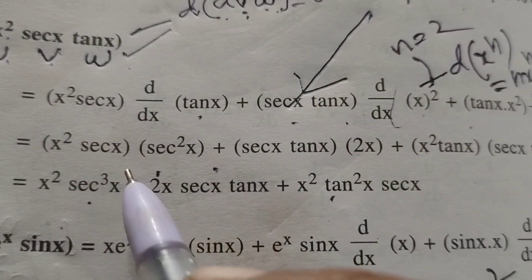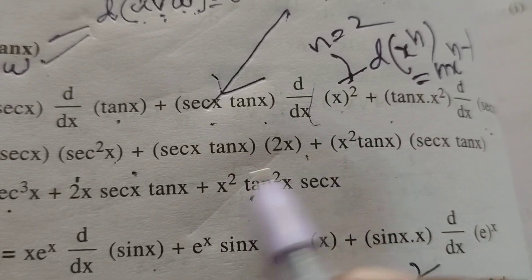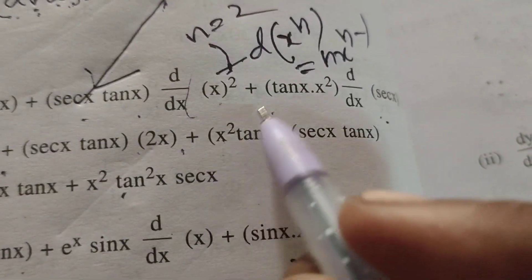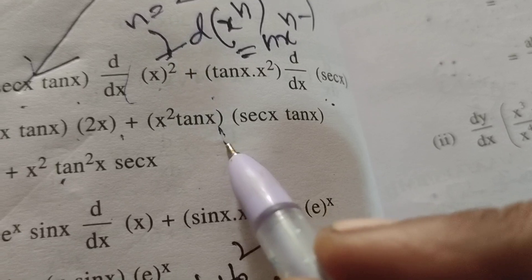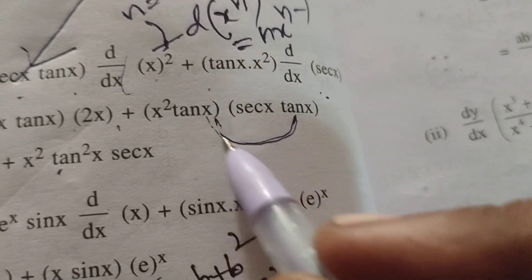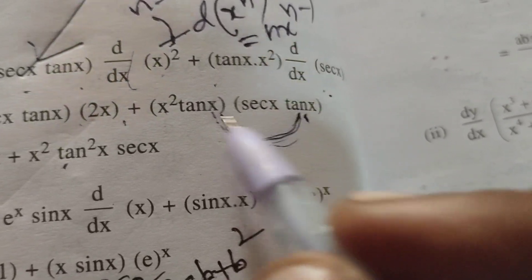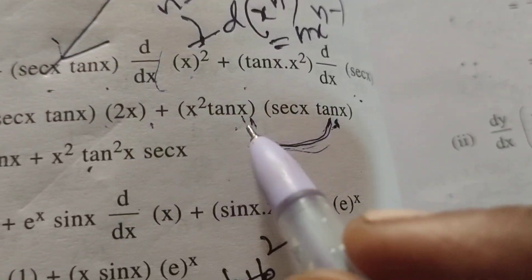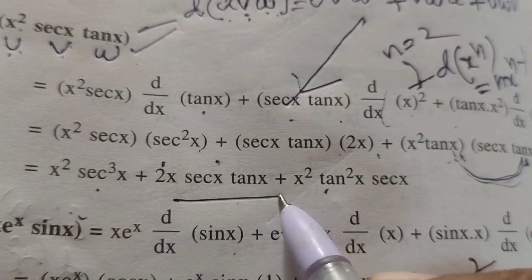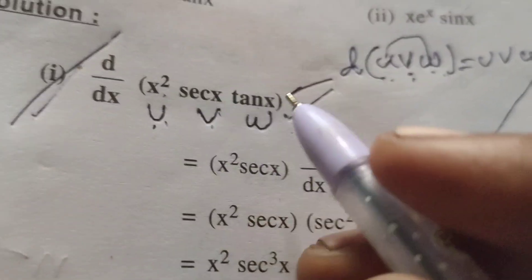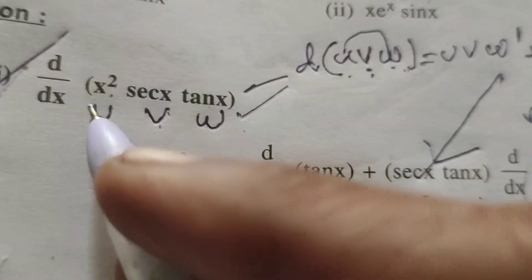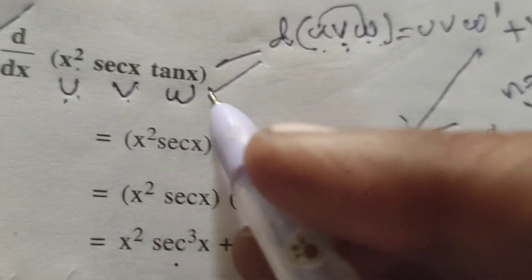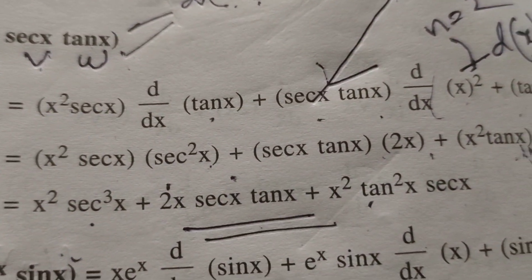Therefore: x squared · secant cubed x, plus 2x · secant x · tan x, plus x squared · tan squared x · secant x. This is the solution for the given differentiation of the function d by dx of x squared secant x tan x. Thank you.